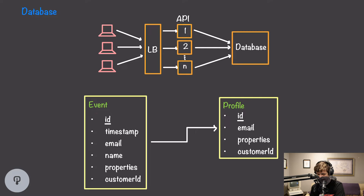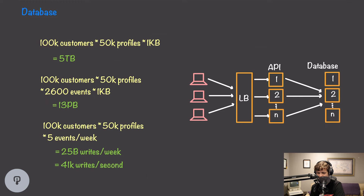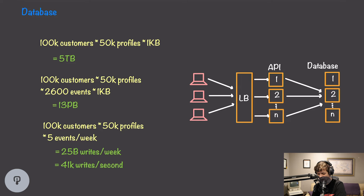For events, we track the email address, name of the event, and any properties for that event. On the back end, we also include the timestamp and customer ID. Doing the math: with 100,000 customers, each having 50,000 profiles at about 1 kilobyte each, that's 5 terabytes of profile data. Assuming each profile has around 2,600 events on average at 1 kilobyte each, that's 13 petabytes of event data. With each profile producing 5 events per week, that's 25 billion writes per week — 41,000 writes per second — far too much for a single database node.